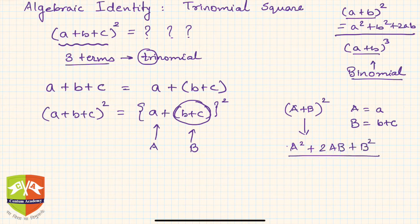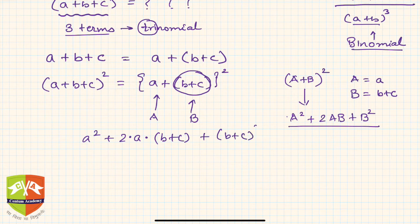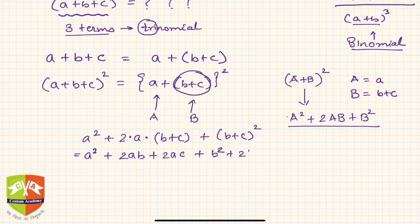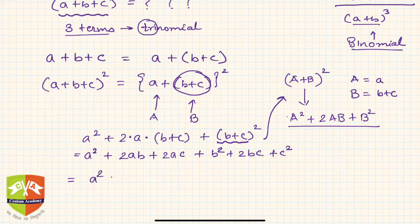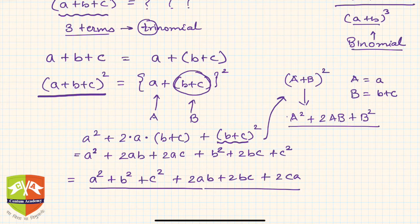Using the same identity, we get a² + 2·a·(b + c) + (b + c)². Let's simplify by opening all the brackets: 2ab + 2ac + b² + 2bc + c². Keeping all the squared terms together, we get a² + b² + c² + 2ab + 2bc + 2ca. This is the identity we arrive at.